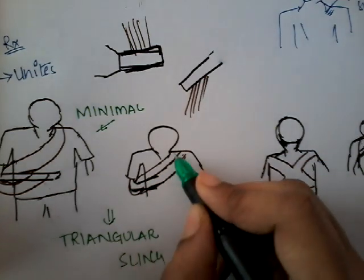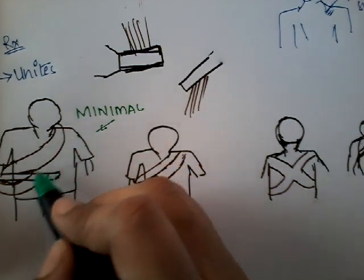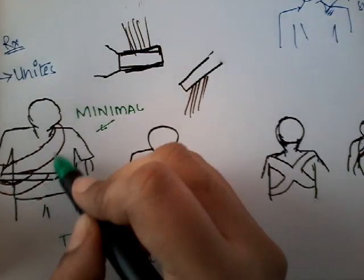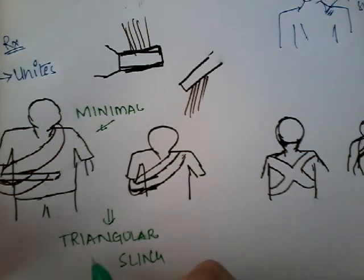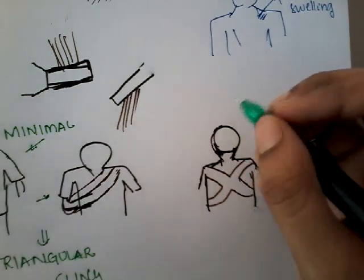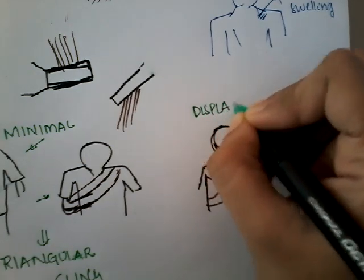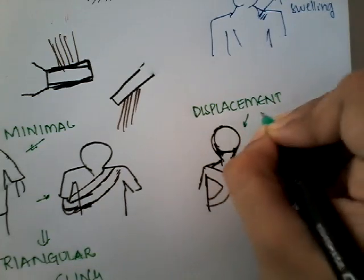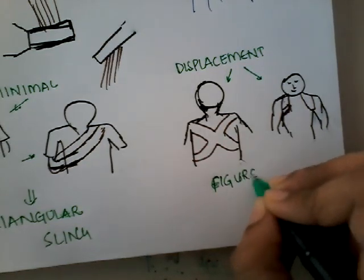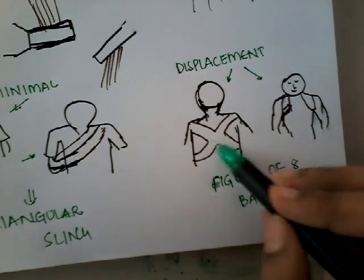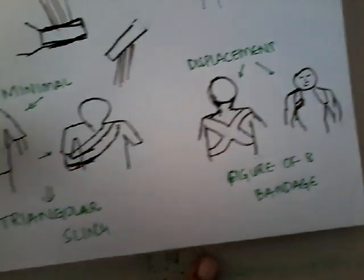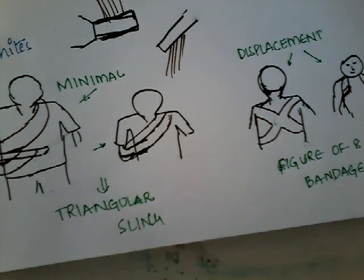The triangular sling wraps below and around the arm. If there is minimal or major displacement, you can also use a figure-of-eight bandage, which is in the form of the number eight — it looks a particular way from the back and front. These are the two major options available for immobilization.